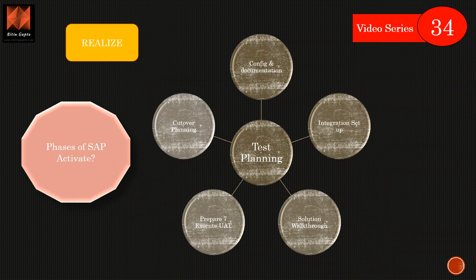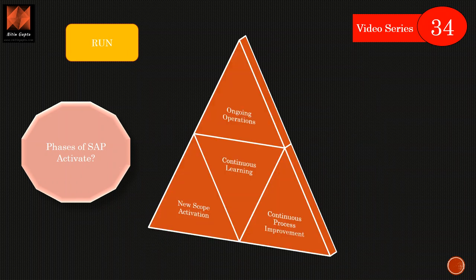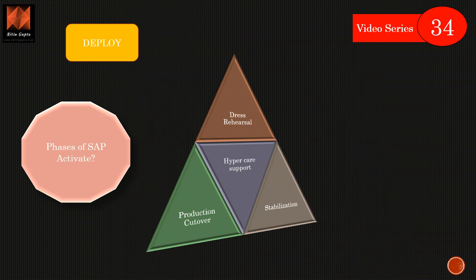Then we go to deploy phase. In deploy phase we do dress rehearsal, hypercare support and we look for the stabilization of the solution where we do final cutover planning, the dress rehearsal happens, we do production cutover, stabilize the solution and then we look for the hypercare support or post-go-live support which is like six weeks or ten weeks or eight weeks depending on how the system integrator is contracted with. This is basically we finally deploy the solution, we hand it over, we convert it into BAU but at the same time it is still in hypercare phase.